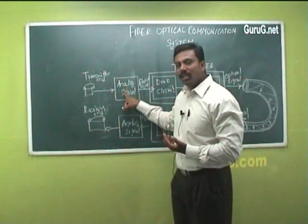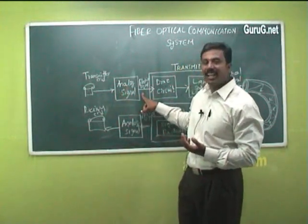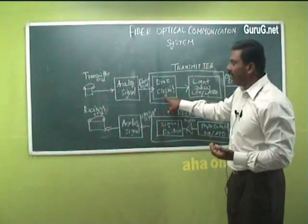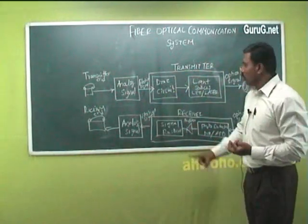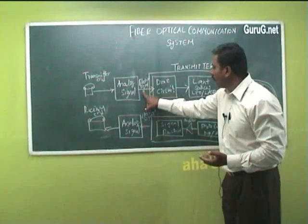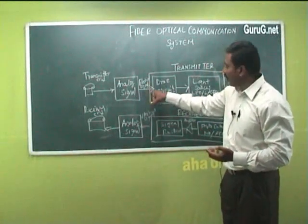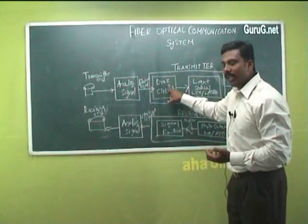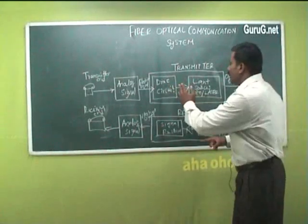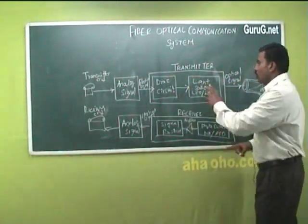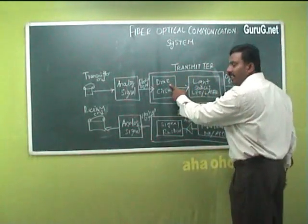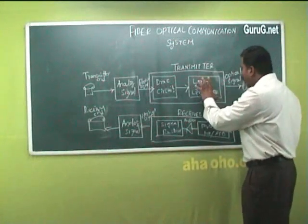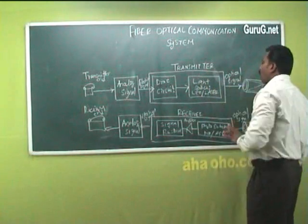When speaking through a telephone, the analog signal is converted into an electrical signal and fed to the transmitter. The transmitter consists of a drive circuit and a light source. The drive circuit converts the received electrical signals into digital signals, which are then fed to the light source, where they are converted into optical pulses. Only optical pulses can be transmitted inside the optical fiber.